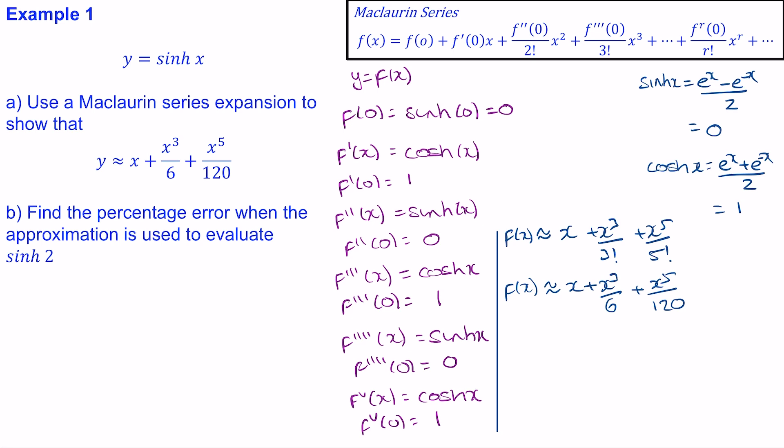And for part b, find the percentage error when the approximation is used to evaluate sinh(2). So we'll work out f(2). We'll substitute 2 in place of x. So we get 2 plus 2^3 which is 8 over 6, plus 2^5 which is 32 over 120.